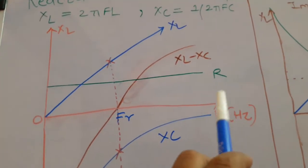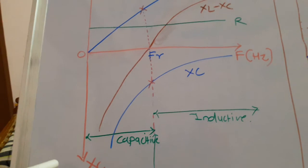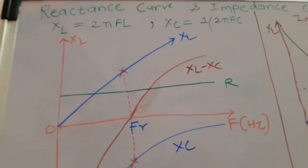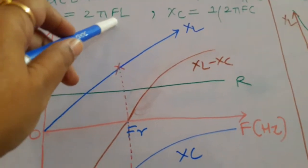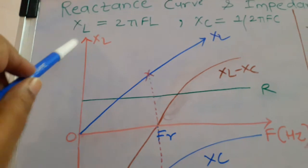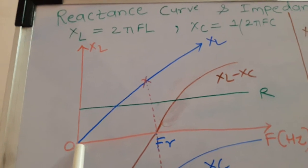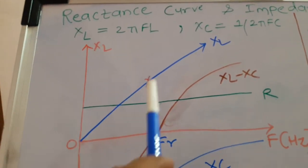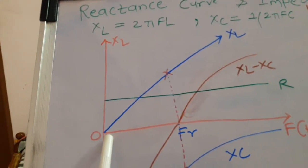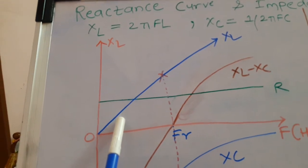Frequency is plotted on the x-axis and inductive reactance on the y-axis. Capacitive reactance is on the negative y-axis with frequency on the x-axis. If frequency equals zero, inductive reactance is zero; if frequency equals infinity, inductive reactance is infinity. As frequency increases, inductive reactance also increases. This gives a straight line passing through the origin at 45 degrees — the inductive reactance curve, indicated in blue.